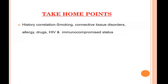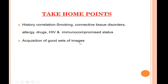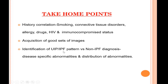Key points for HRCT evaluation of interstitial lung disease: First, history correlation is essential — smoking has specific associated ILDs, connective tissue disorders are important, allergy history is important for hypersensitivity pneumonitis, drugs like amiodarone cause lung fibrosis, and HIV or immunocompromised status is associated with LIP-like ILDs and Pneumocystis carinii pneumonia. Second, acquisition of good image sets is the most important preliminary step. Then identify non-fibrosing versus fibrosing diseases and exclude the UIP or IPF pattern first, based on disease-specific abnormalities and typical distribution.